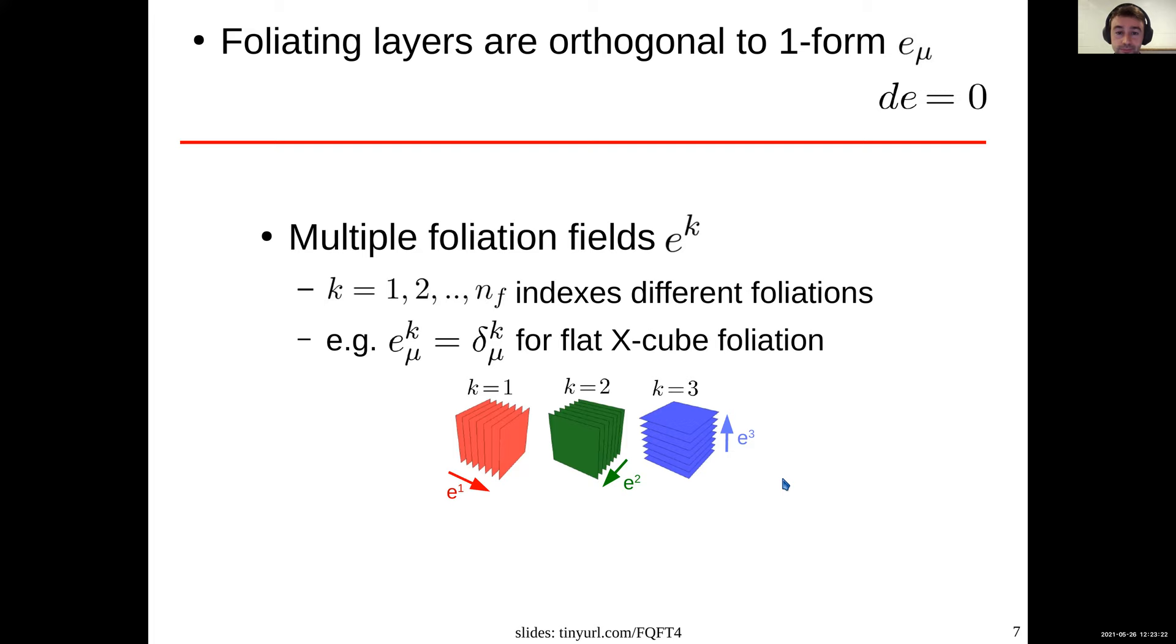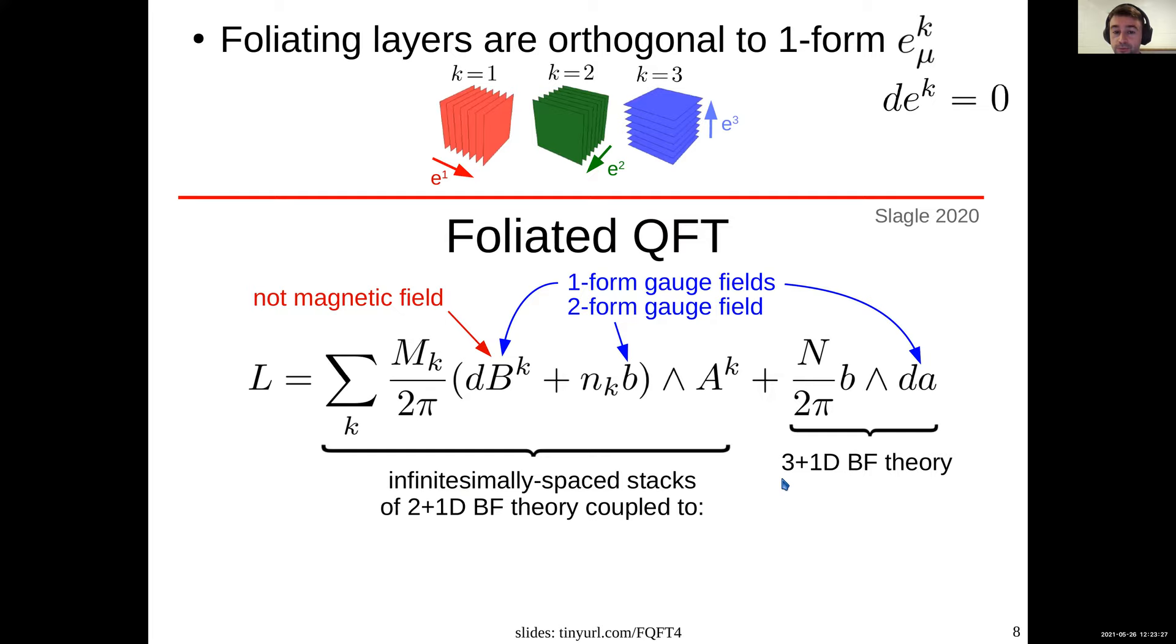That's the space-time structure of the X-cube model in terms of fields. Now we're ready to write down a field theory. This will be the foliated field theory, which can describe, for example, the X-cube model using certain coefficients of big N, little N, and big M. This last term describes a 3+1D BF theory by itself. So this little b is a two-form gauge field, while little a is a one-form gauge field. That means little b has two indices which are antisymmetric, while little a has one. By itself, this last term, you can think about it as describing a 3D toric code. We call this BF theory because the Lagrangian is B times dA, but dA is just F. So it's basically B times F, so BF theory, the name.